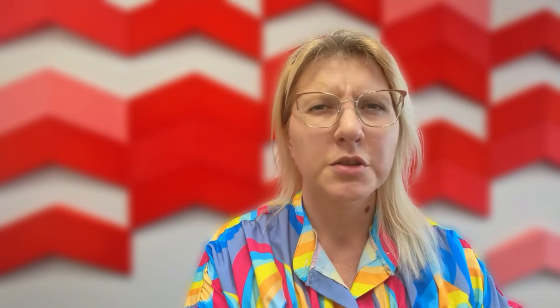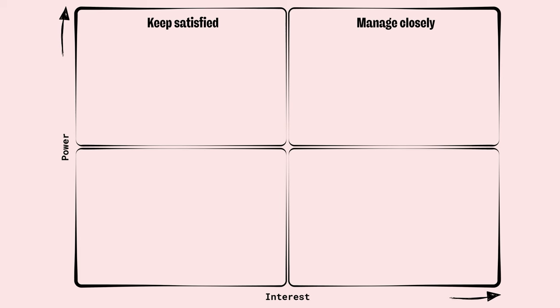When we plot our stakeholders on the Power-Interest Matrix, we end up with four categories, each requiring its own management strategy. The big players in the top-right quadrant are the ones to manage closely. They're super interested in your project and have a lot of influence over how it turns out — think of people who make resourcing decisions or your CEO who wants to pitch in personal ideas for a redesign. If you don't manage them well, they could accidentally or intentionally mess up your project, but if you do, they can become your biggest supporters.